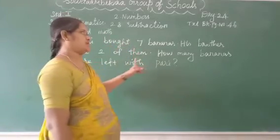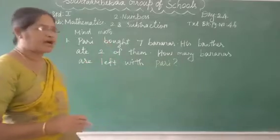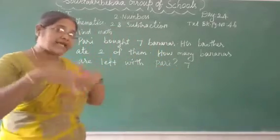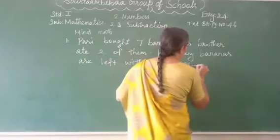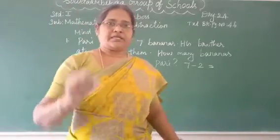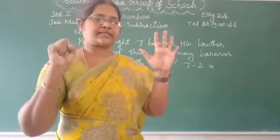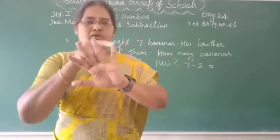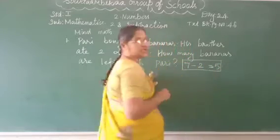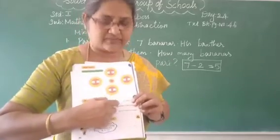Pari bought seven bananas. His brother ate two of them. So, seven minus two. Fold the two fingers: 1, 2. Remaining: 1, 2, 3, 4, 5. Seven minus two equal to five. Write this in the space. Okay. Next.